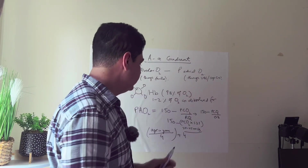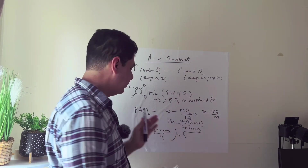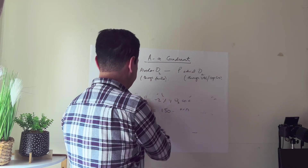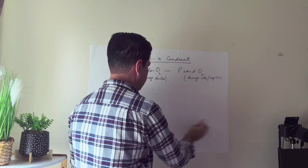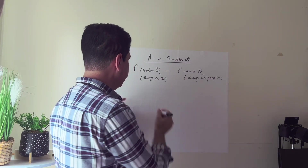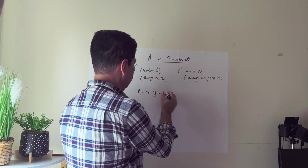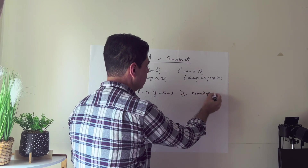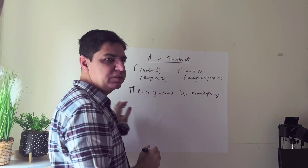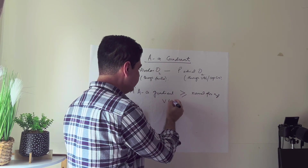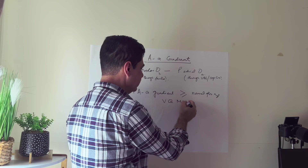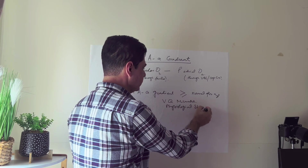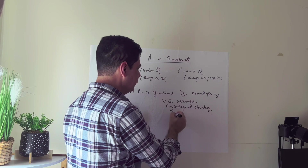Once you have the AA gradient, you assess whether it is within the normal limit for that age group. If the AA gradient is greater than normal for age, it is called an increased AA gradient. An increased AA gradient means there are problems — either VQ mismatch (ventilation-perfusion mismatch), physiological shunting, or a problem with diffusion across the capillary membrane.